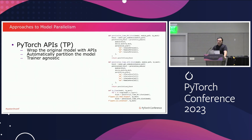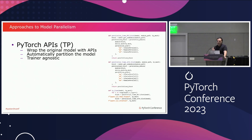We also have PyTorch Tensor Parallel APIs, which work with D-tensors. You can pass your sharding strategy to the parallelize module and it will simply parallelize your modules onto different devices. Again, same strategy — you don't need to change your model code, and these are all trainer agnostic, so you can do inference when bringing arbitrary checkpoints from different libraries.